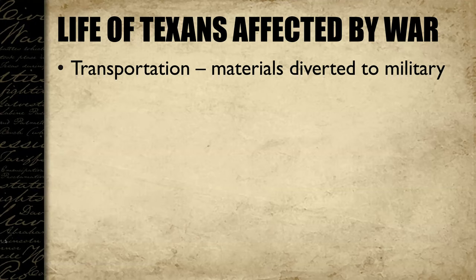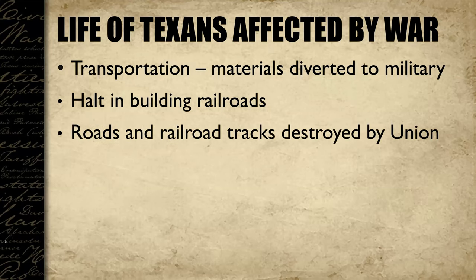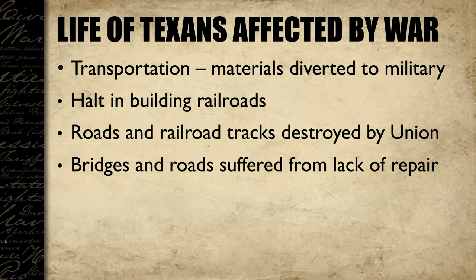Transportation was also affected. Railroads had just started being built in Texas when the war started, but the iron and steel needed to build train tracks and locomotives were diverted to the military, halting railroad construction. In the South and partially in Texas, roads and railroad tracks were also destroyed by Union soldiers to disrupt Confederate transport. Bridges and roads fell into disrepair as well, because there weren't enough men on work crews to repair them when they were damaged or deteriorated.